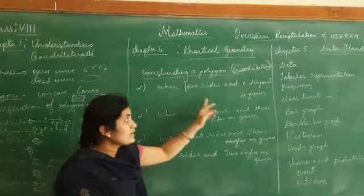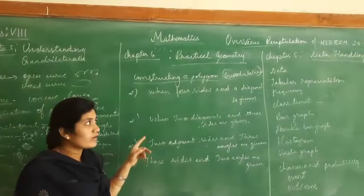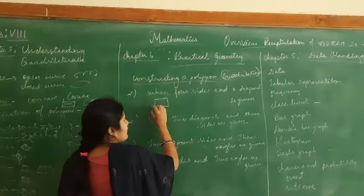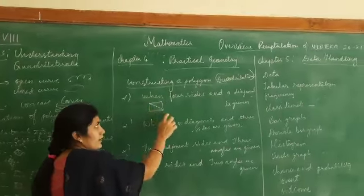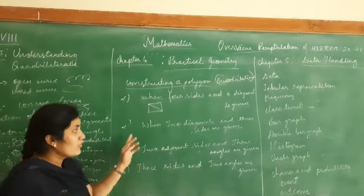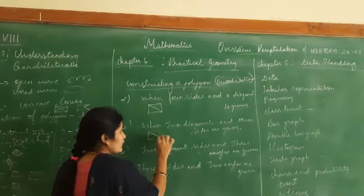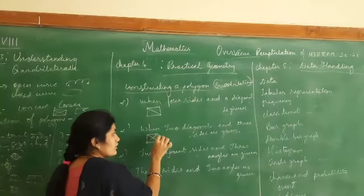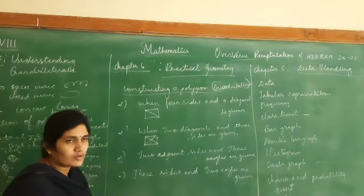When all four sides and a diagonal are given, you can construct the quadrilateral - this is shown with a rough sketch. When two diagonals and three sides are given, three sides are known and the fourth side becomes known after construction.